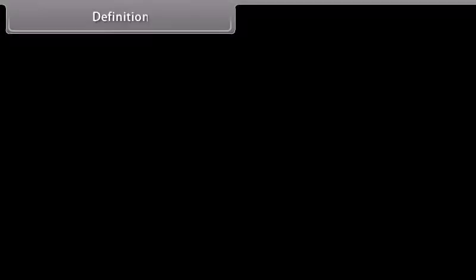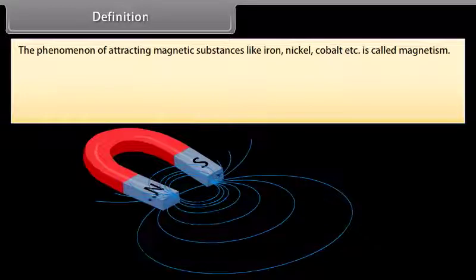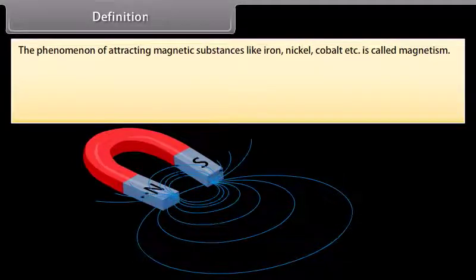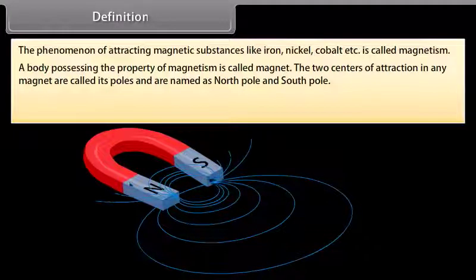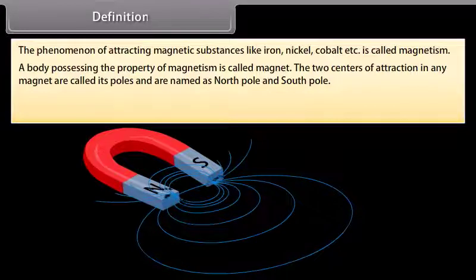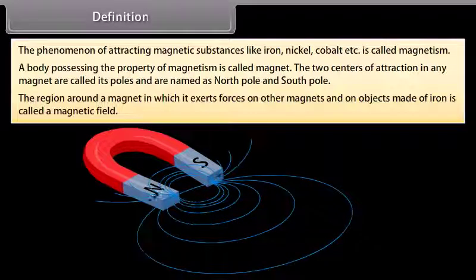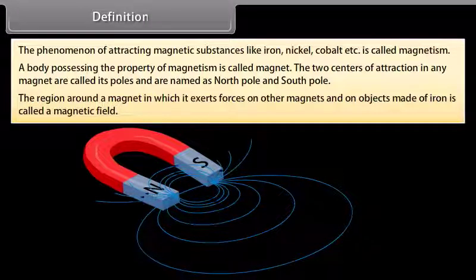The phenomenon of attracting magnetic substances like iron, nickel, cobalt, etc. is called magnetism. A body possessing the property of magnetism is called a magnet. The two centers of attraction in any magnet are called its poles, named as north pole and south pole. The region around a magnet in which it exerts forces on other magnets and on objects made of iron is called a magnetic field.